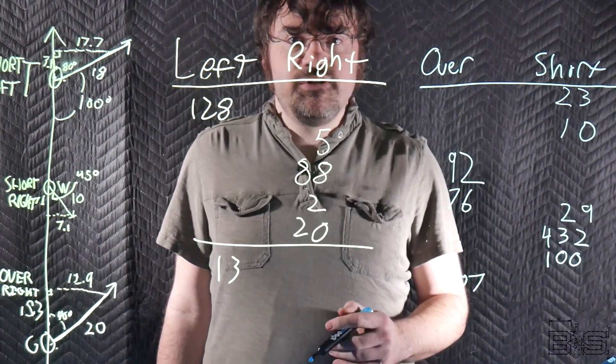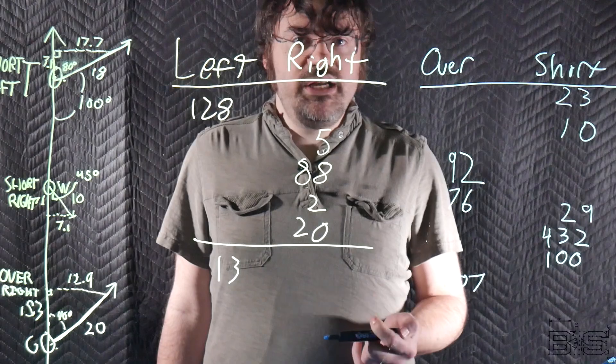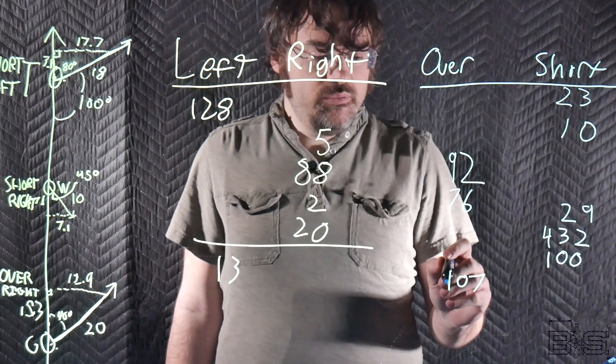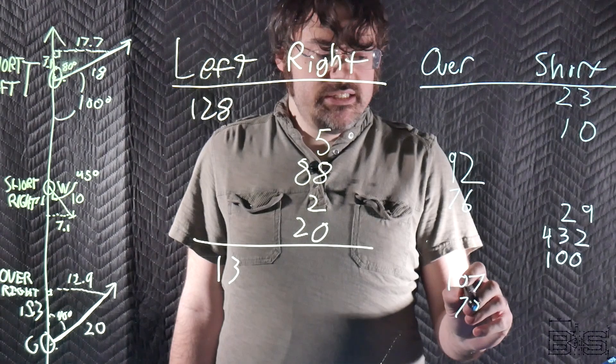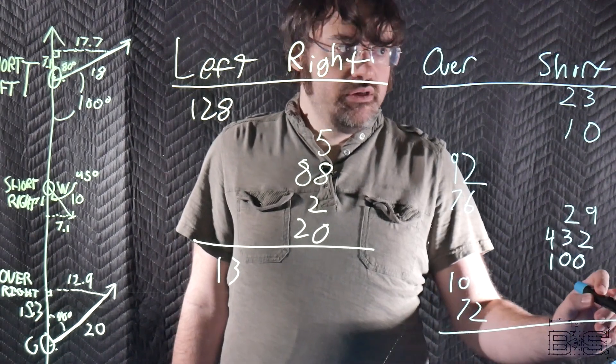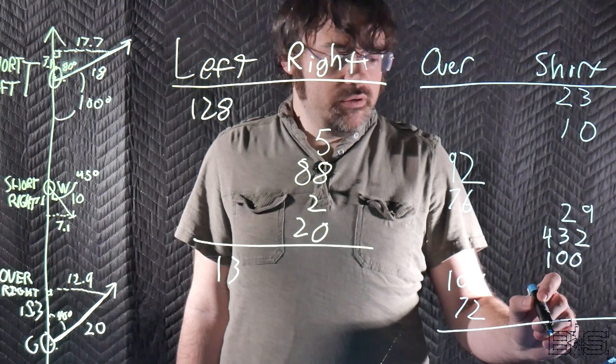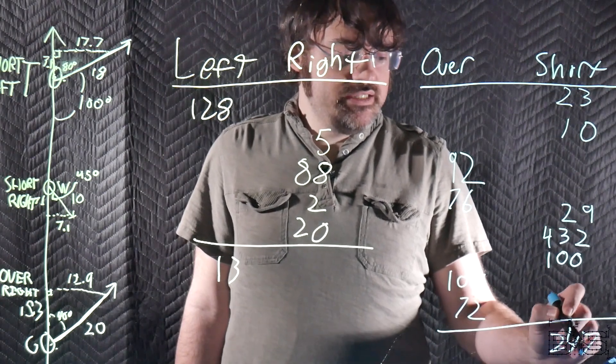Now we have to account for the curvature of the earth. The range table states that a target 10,000 yards away will drop by 21.5 feet. So we do the same with that and we'll end up with we'll say 72 yards over. For a grand total of range errors we'll be short by 247 yards.